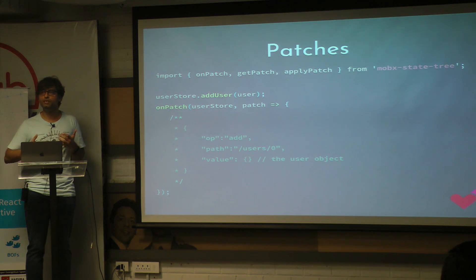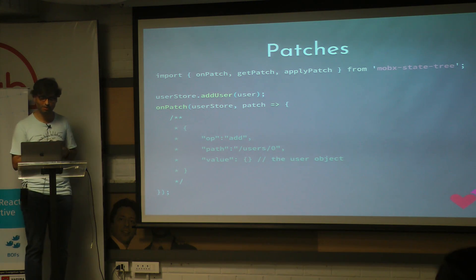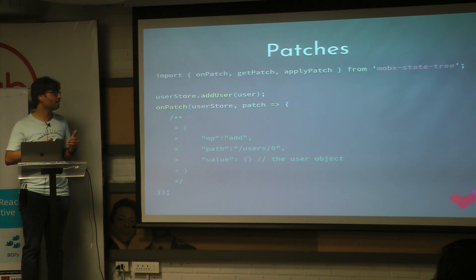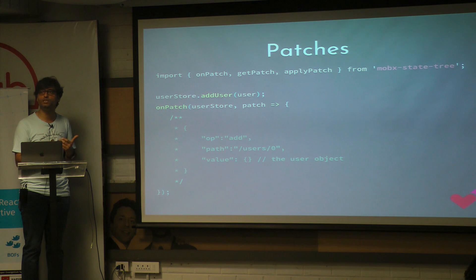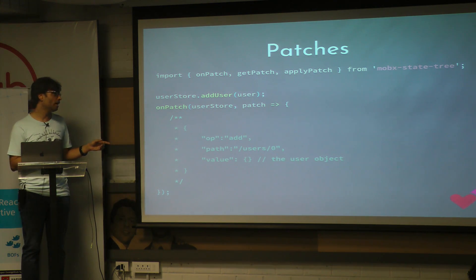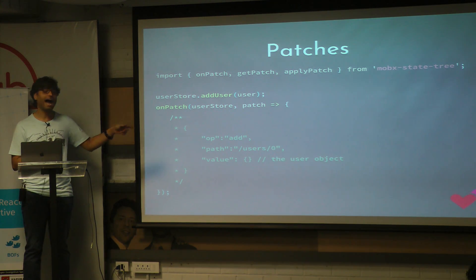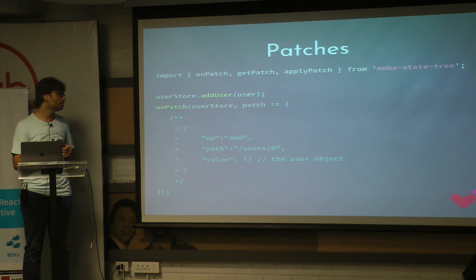Snapshots give you the state of the entire object — the whole tree. You may not probably be interested in that. So what MST also supports is something called patches. It's apparently a JSON Patch RFC spec — I didn't know about it before this. What this does is whenever you apply any changes, you can tune in to the exact specific thing that changed. So you don't necessarily need to listen to everything changing throughout your tree, which could be full of a ton of nodes. You can specifically look at exactly the element that changed, the new value, and the operation that was applied.